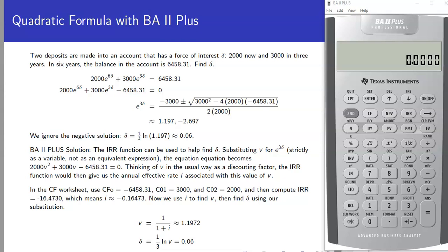Let's suppose we have two deposits made into an account with a force of interest of delta. We've got $2,000 now and $3,000 in three years. And in six years, we know that the balance in the account is $6,458.31. This problem asks us to figure out what delta is.